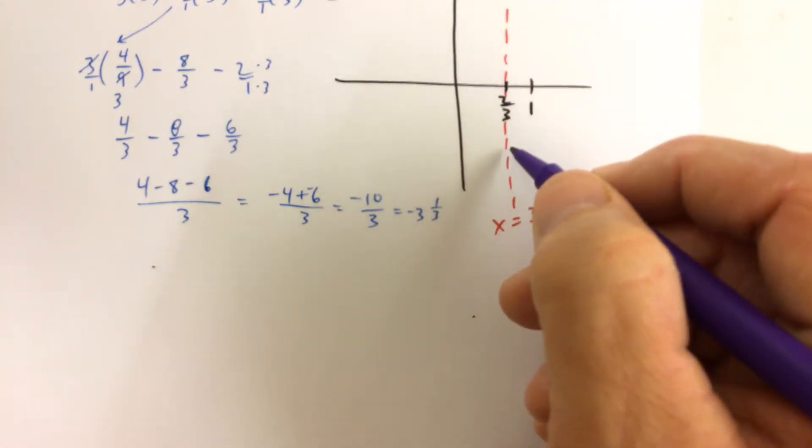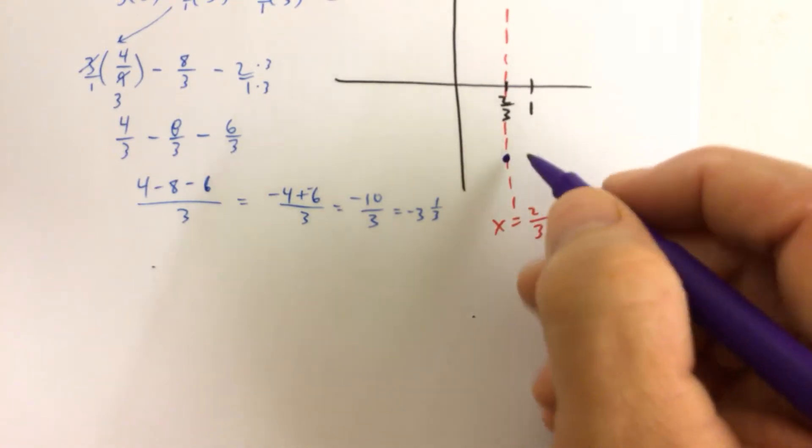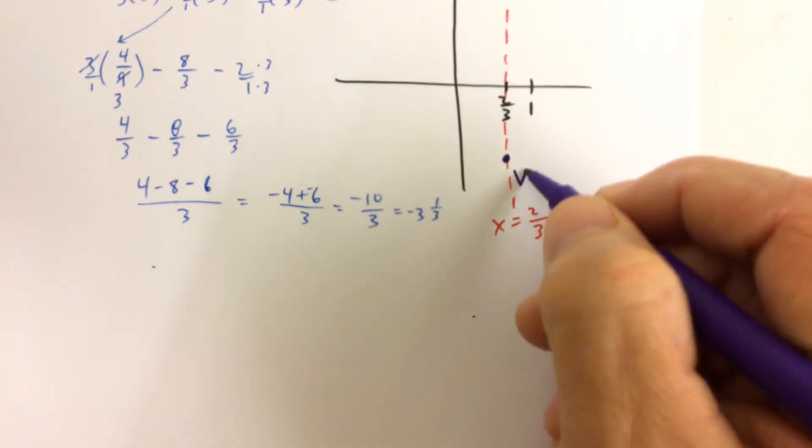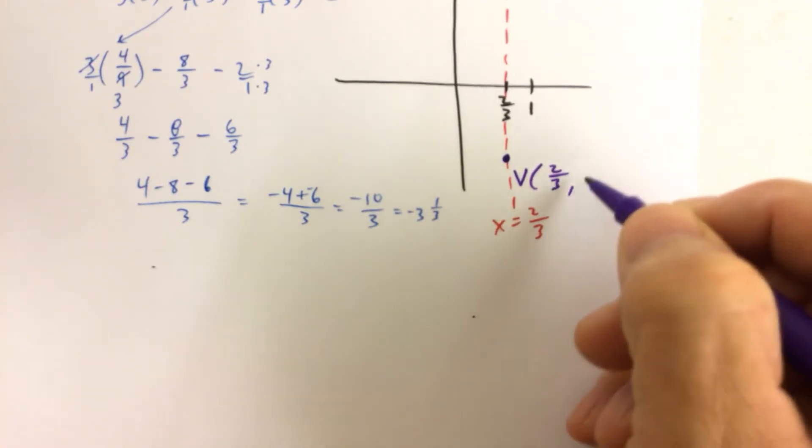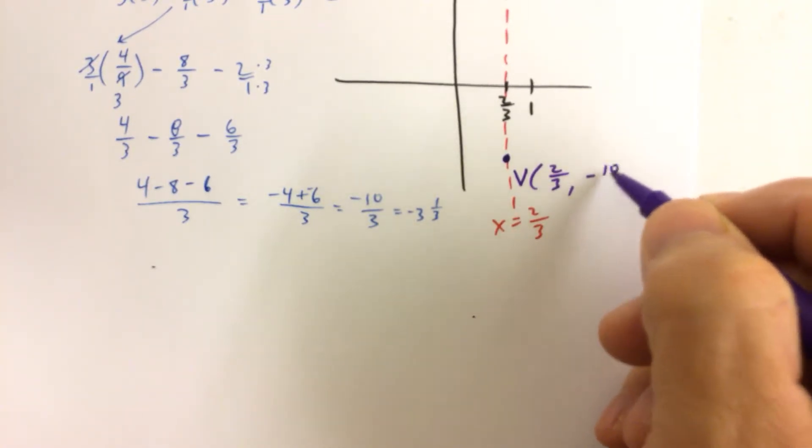And then you decide where negative 10 thirds is going to be. It's going to open up. So the vertex is at 2 thirds comma negative 10 thirds.